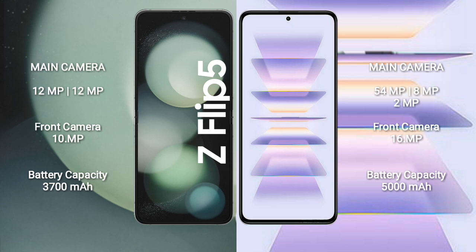Samsung Galaxy Z Flip 5 features a dual rear camera setup of 12MP plus 12MP, and a 10MP front camera. Redmi K60 Pro features a triple rear camera setup of 54MP plus 8MP plus 2MP, and a 16MP front camera.